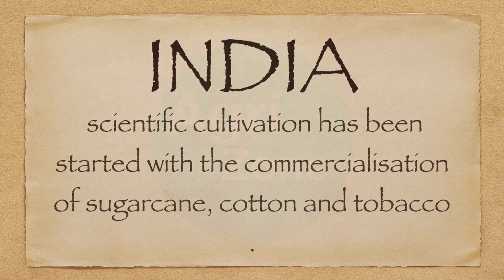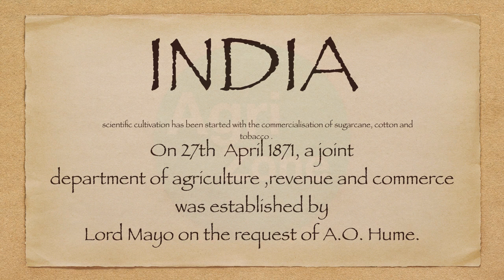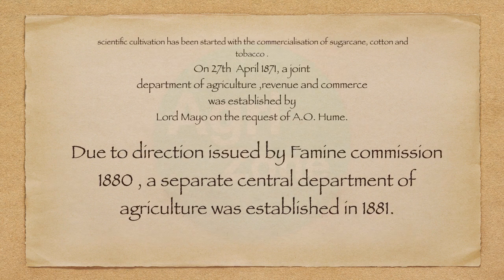In India, scientific cultivation started with the commercialization of sugarcane, cotton, and tobacco. On 27th April 1871, a joint Department of Agriculture, Revenue, and Commerce was established by Lord Mayo on the request of A.O. Hume. Due to directions issued by the Famine Commission in 1880, a separate Central Department of Agriculture was established in 1881.